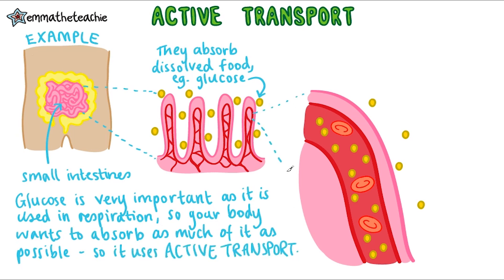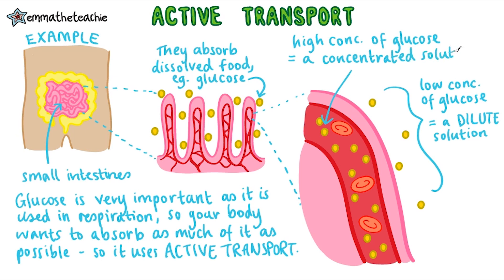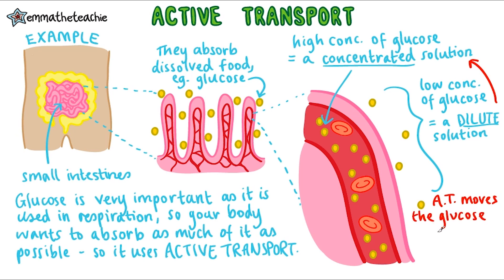If we zoom in a little further, we'll see how this works in the small intestines. We can see there's a low concentration of glucose — therefore this is the dilute solution. Inside the blood vessels, we've got a high concentration of glucose, and therefore this is called the concentrated solution. Your body is able to move the glucose from where it is in a dilute solution to where it is in a more concentrated solution, moving it against a concentration gradient, bringing it inside your bloodstream, and transporting it to tissues where respiration can then take place.